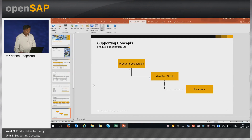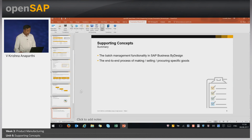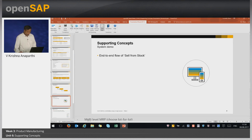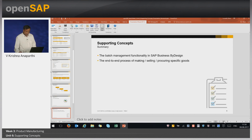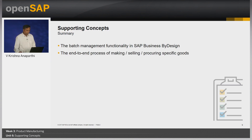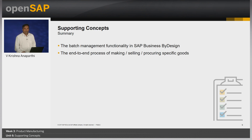Once I issue the goods, the system will reduce the inventory accordingly. With that, let us come back to the slides — that is the end of the demo and also the end of unit 6. To quickly summarize, in this unit we have primarily learned the batch management functionality and how PRS is used in the end-to-end process. With that we complete week 3. Hope you enjoyed the sessions. Goodbye.